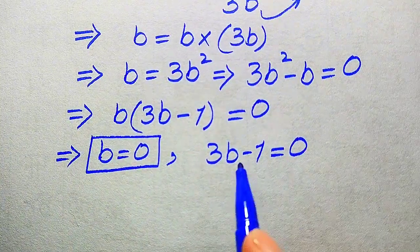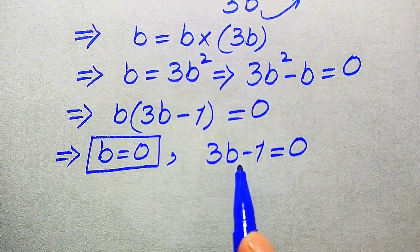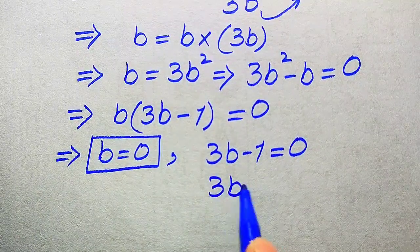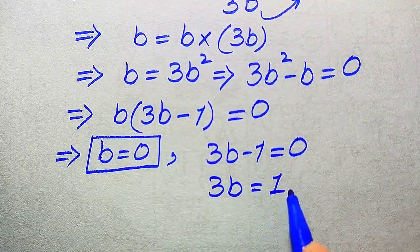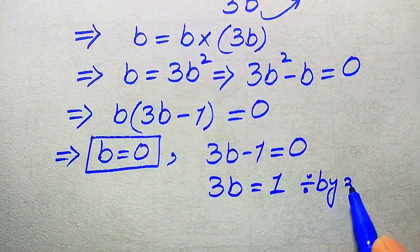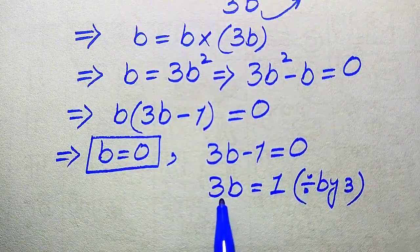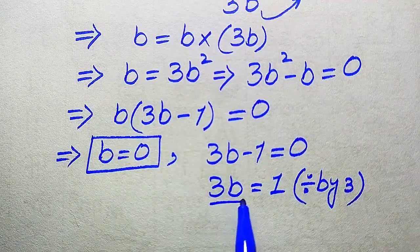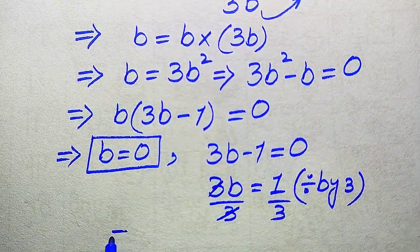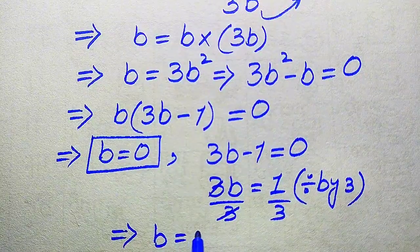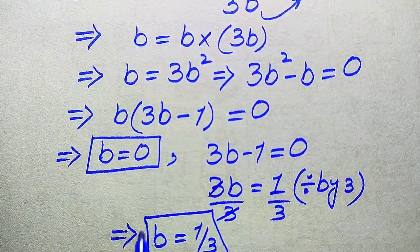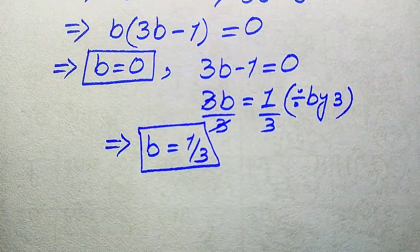So b equals zero is the first root of the given equation. To find the other root, we solve 3b minus 1 equals zero. We move minus 1 to the right hand side to get 3b equals 1, then divide both sides by 3 — the 3s cancel — and we get b equals 1 over 3. So this is the second value of b.